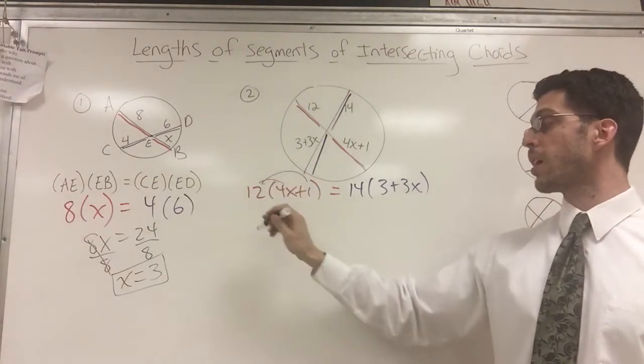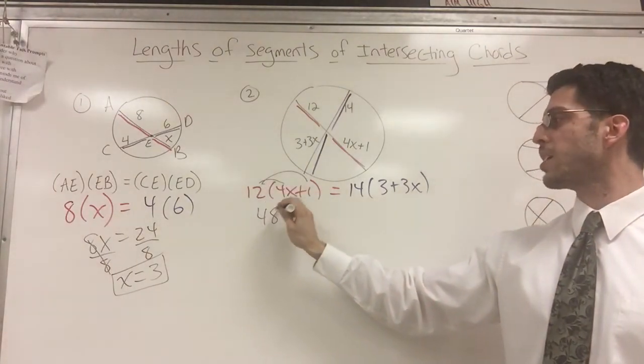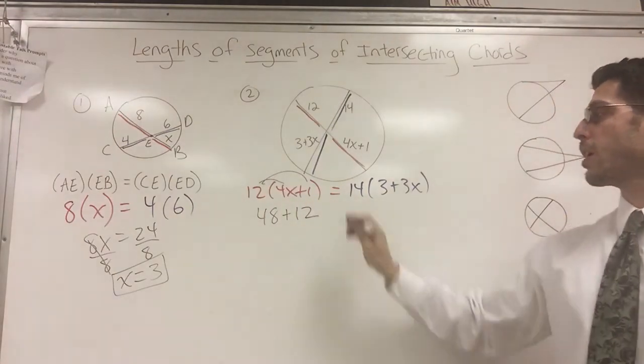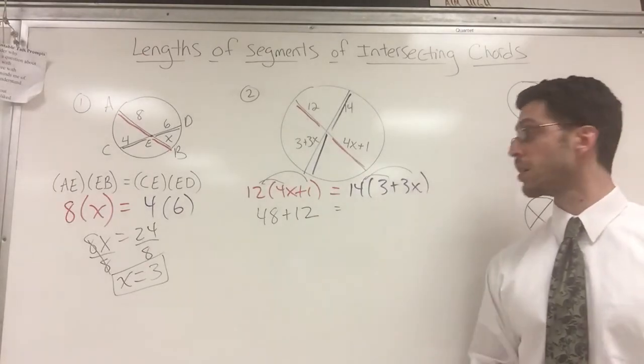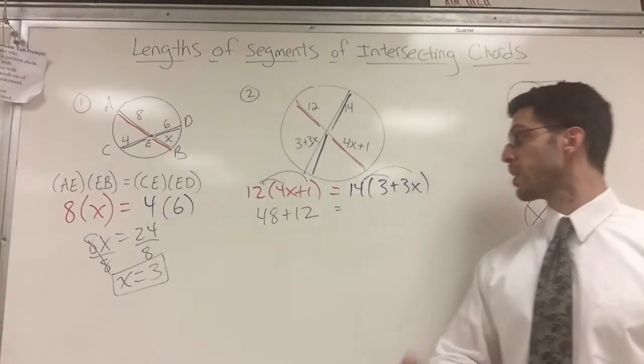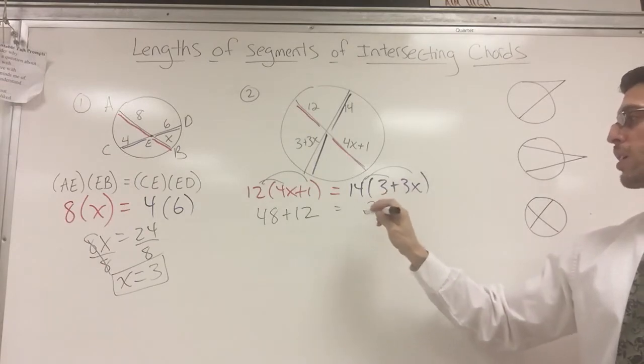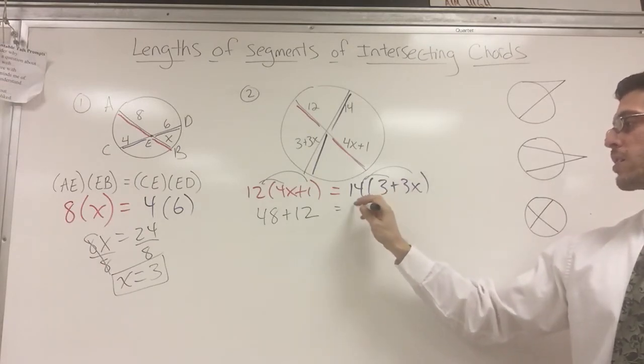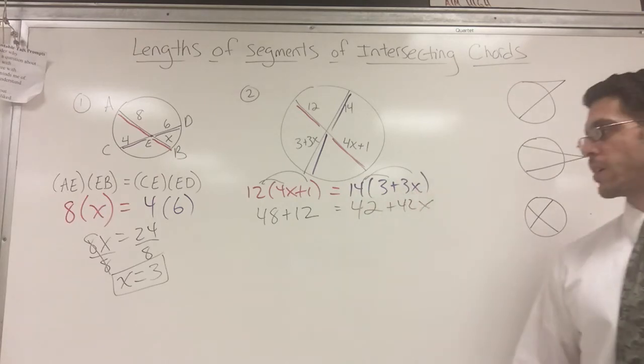I'm going to distribute this time. 12 times 4 is 48 plus 12 equals 14 times 3 is... I wish I had a calculator. This is 12 and this is 42 plus 42X. All right.